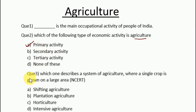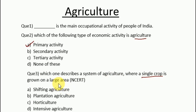The third question: which one describes a system of agriculture where a single crop is grown on a large scale? The four options are: A. Shifting agriculture, B. Plantation agriculture, C. Horticulture, D. Intensive agriculture. The correct answer is option B, i.e., plantation agriculture.